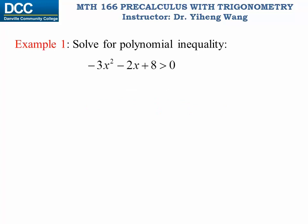Let's look at this example directly. We need to solve the polynomial inequality that negative 3x squared minus 2x plus 8 is bigger than zero, which means we need to look for regions of x values that will satisfy this inequality expression. Using the graphical method, we will first graph the function that equals the left hand side: f equals negative 3x squared minus 2x plus 8.